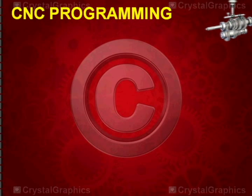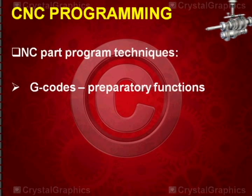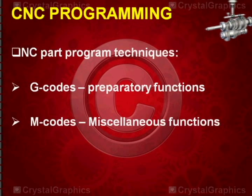Now let us discuss CNC programming. There are two types of NC part programming techniques used to write the program. One is G codes, also known as preparatory functions, and another is M codes, called miscellaneous functions.